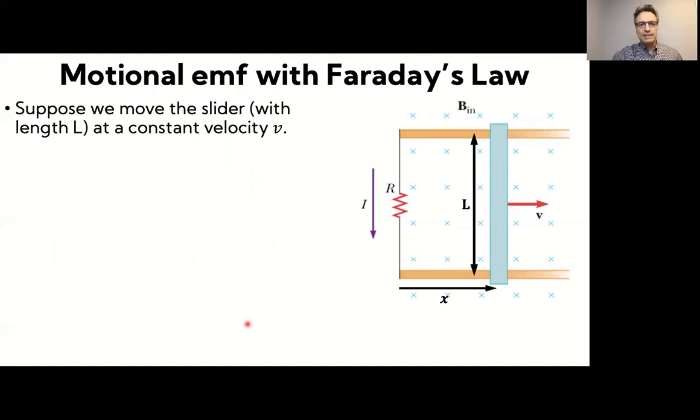So suppose that we move the slider at a constant velocity V indicated here. Suppose that that slider has a length L and we'll actually point the position of the slider from this side, left side of the circuit with X. So the area of the loop is quite simple to calculate. The area is just X times L, this rectangular area here.